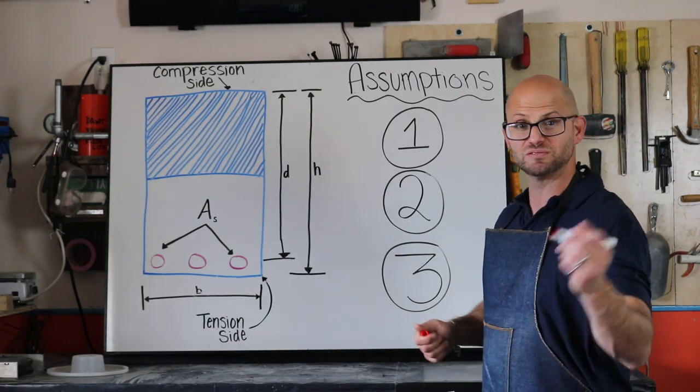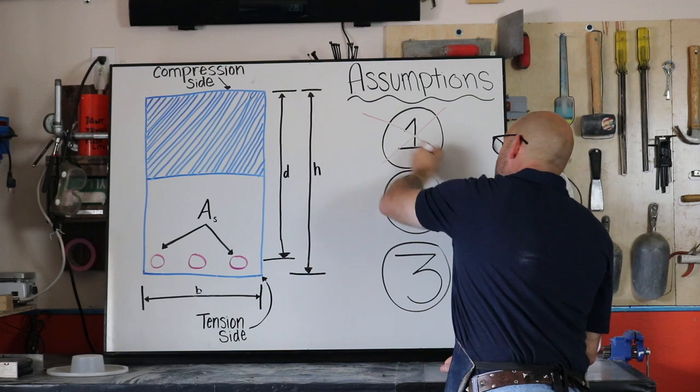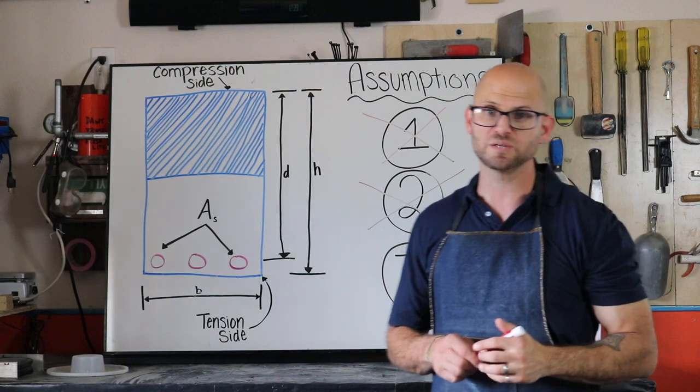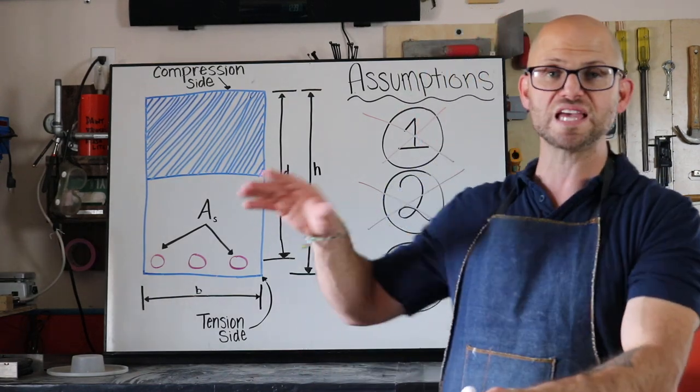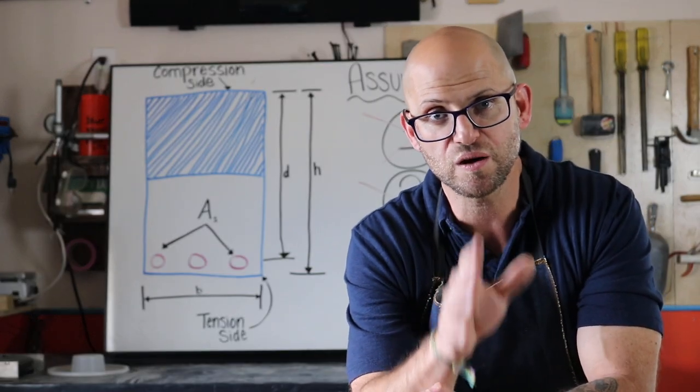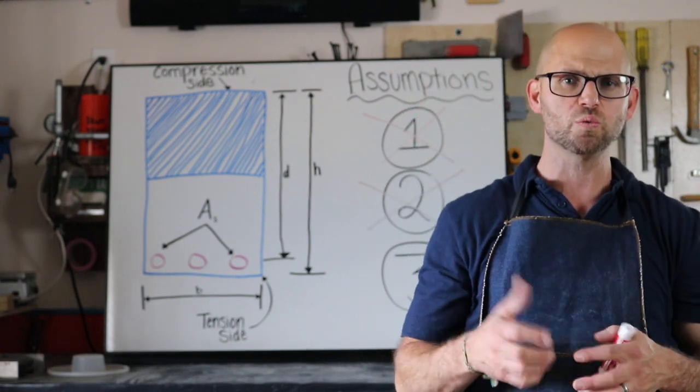So that was assumption number one, and I think we just got through assumption number two, where we assume this is acting as a perfect, homogeneous composite. It's acting together, where the steel and the concrete are one.